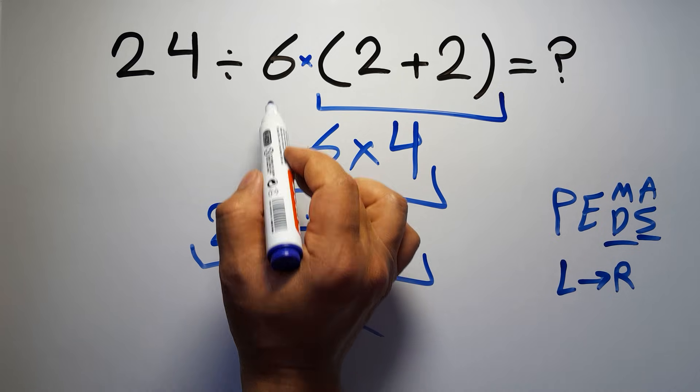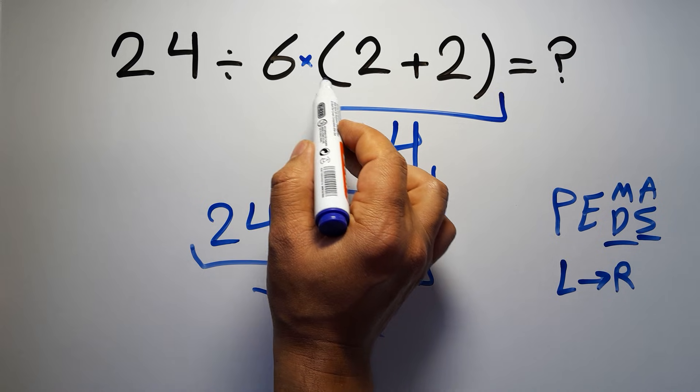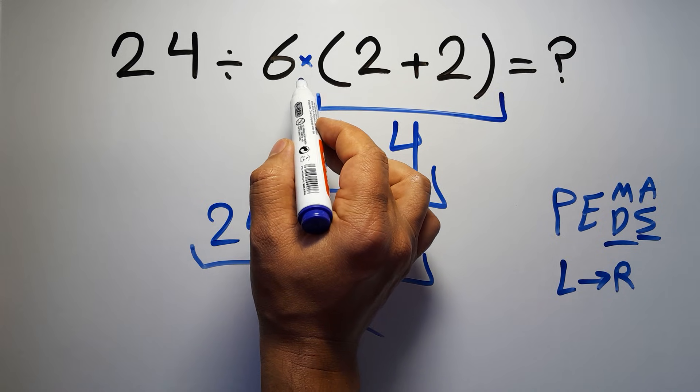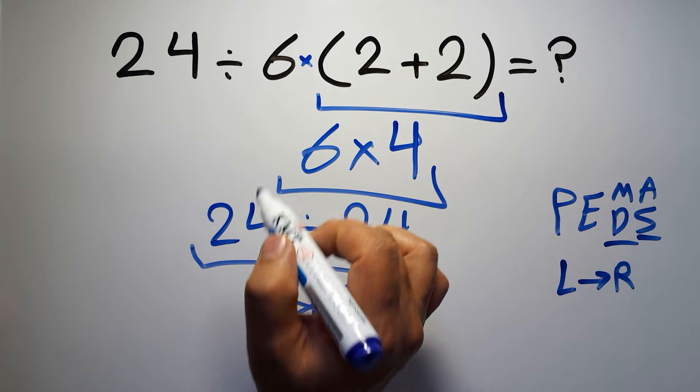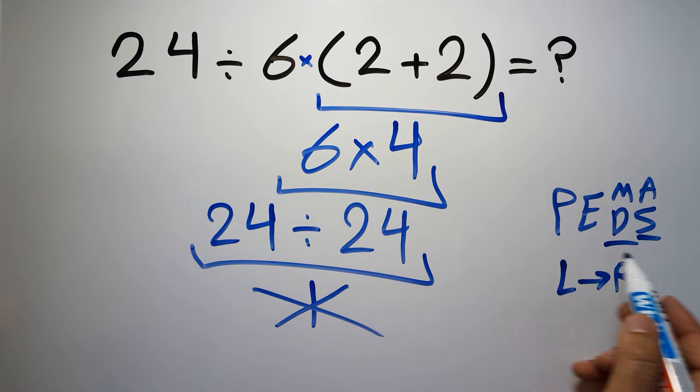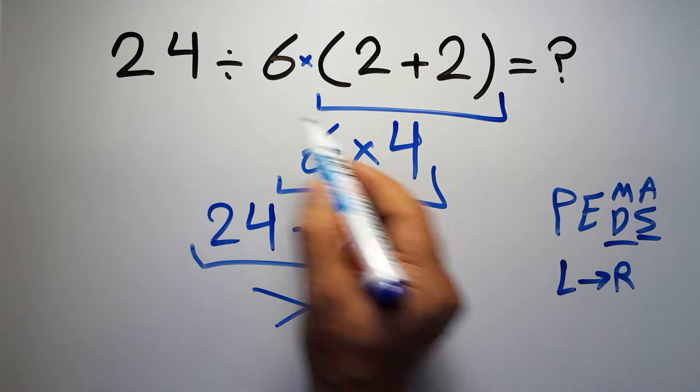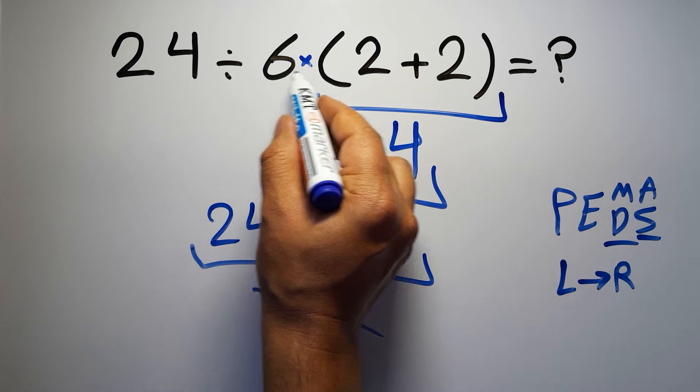Here we have a multiplication because in mathematics when a number is placed next to parentheses it means multiplication, and we usually don't write the multiplication sign for brevity. So according to PEMDAS, first we have to do this parentheses, then this division, and finally this multiplication.